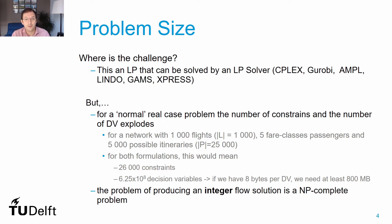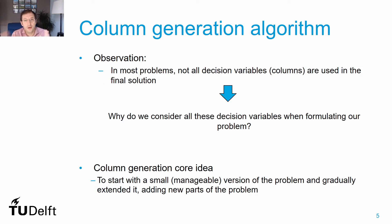So how can we address this challenge and how can we use the key path formulation to help us? The general goal is to break down our problem into a set of small and easier-to-solve problems. A divide-and-conquer approach is always a good way to address large and complex problems. We know that in most problems, especially those with many decision variables, a large number of these variables are not used in the final solution — most will be non-basic and assume a value of zero in the optimal solution. So why consider all of them? That's exactly the idea behind column generation.